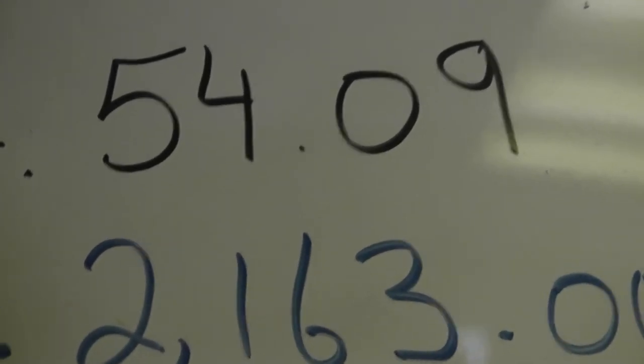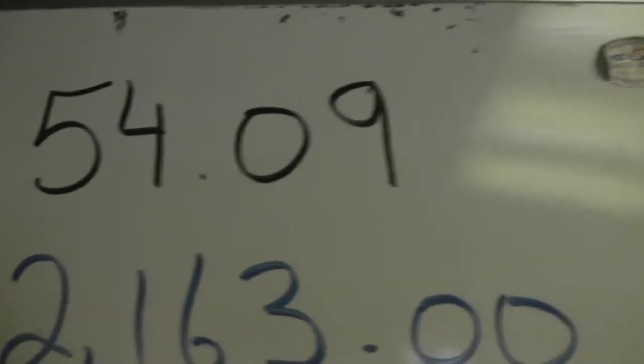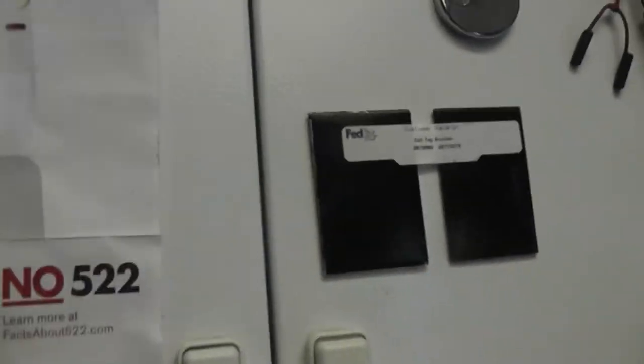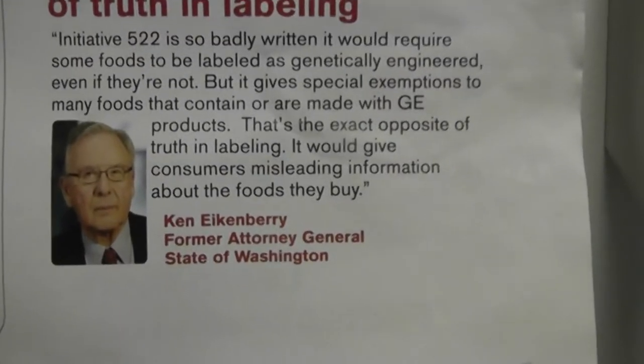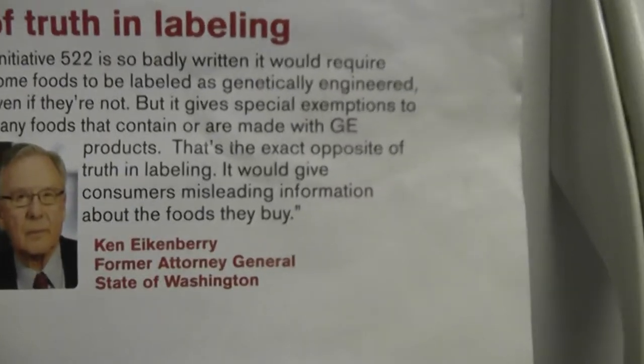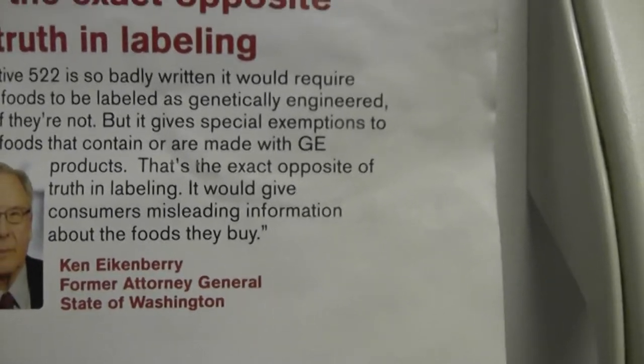We could even do better than that. We could fire the sucker that said this, but I actually can't fire him because he's unemployed. It's this man right here, his name's Ken Eikenberry, he's a former Attorney General of the State of Washington.